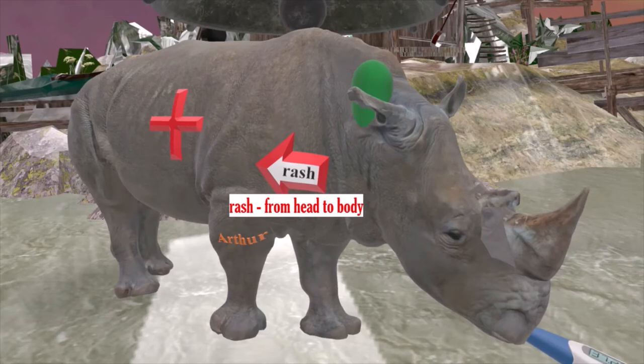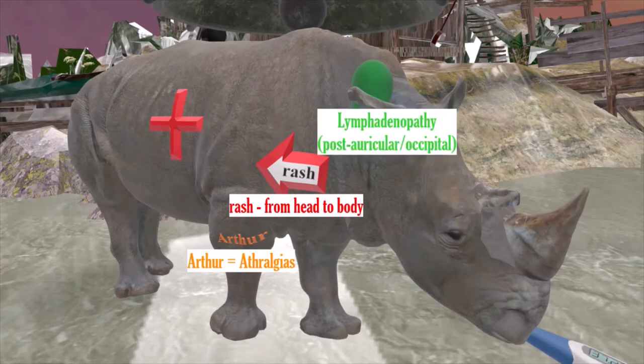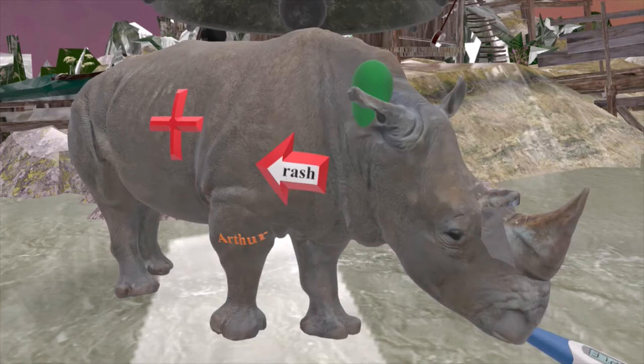This rhino's name is Arthur, which reminds us of the arthralgias that present in rubella infection. The huge lymph node behind his ear reminds us of the postauricular, or occipital, lymphadenopathy that presents in patients. Finally, this thermometer reminds us of the fever that presents.